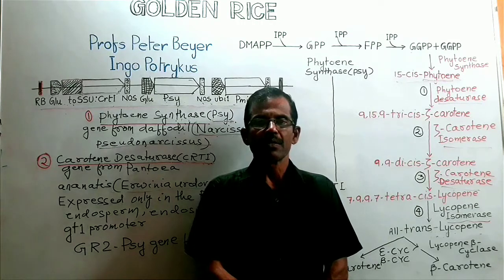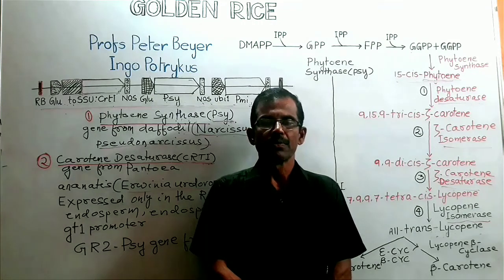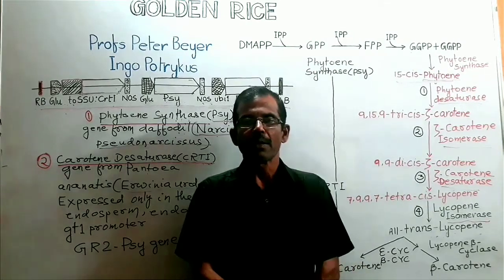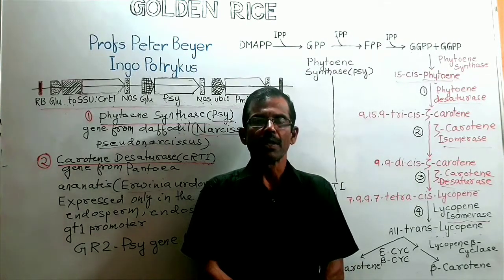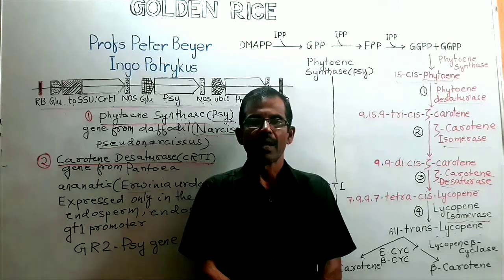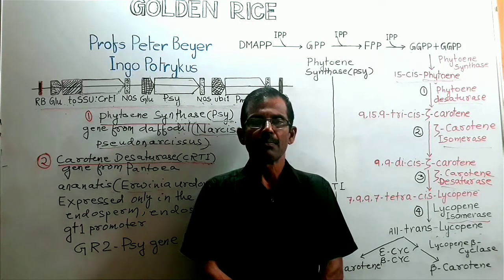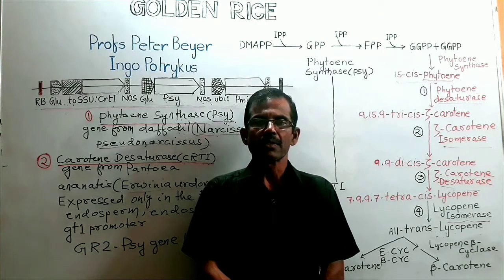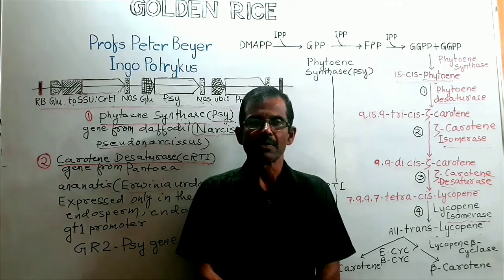Golden rice is a transgenic crop that produces high levels of pro-vitamin A or beta-carotene in its grain. Hello and welcome to some online class. This is Dr. Suprat Kumar Mohanty. Today we shall discuss about golden rice.